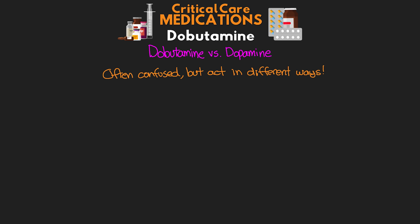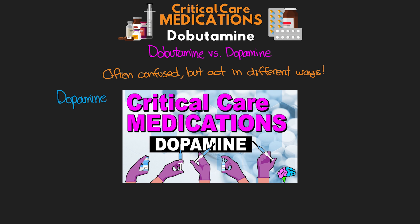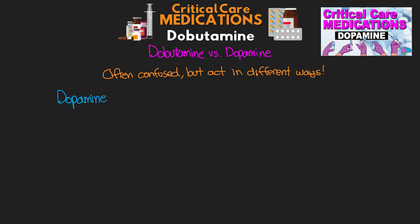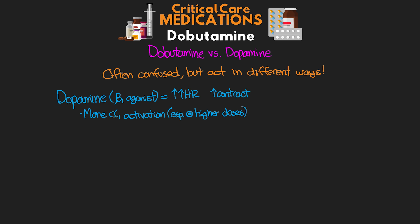If you remember about dopamine, which I covered in a previous lesson linked above, dopamine is another beta-1 agonist, but it has more chronotropic effect and thus we see more of an increased heart rate than we do contractility. Dopamine also has more alpha-1 activation, especially at the higher doses. So instead of vasodilation like we see with dobutamine, we're going to see vasoconstriction by increasing SVR and afterload with the use of dopamine.